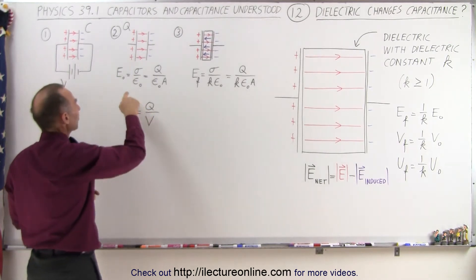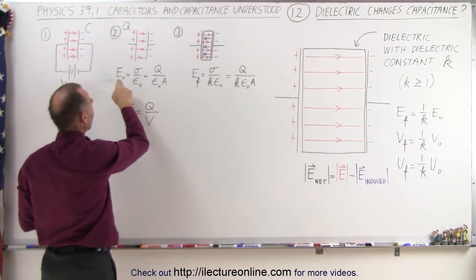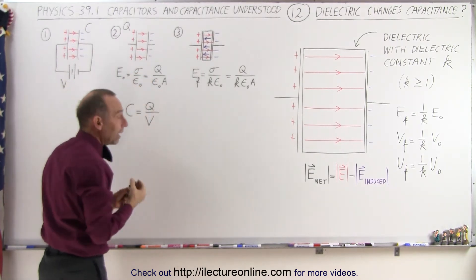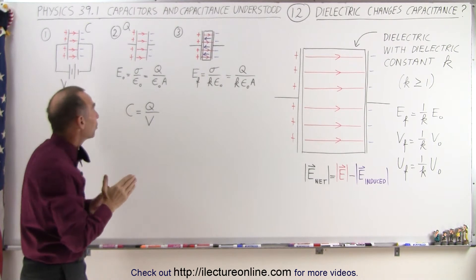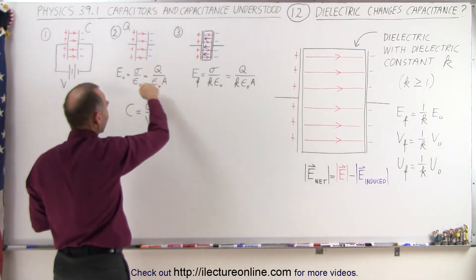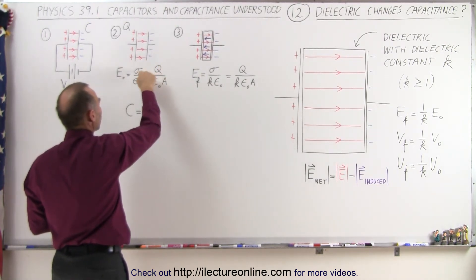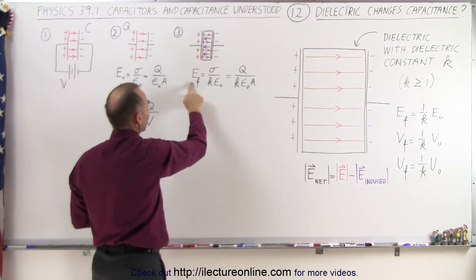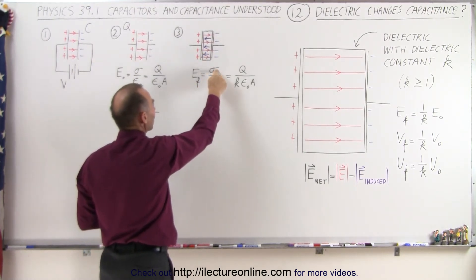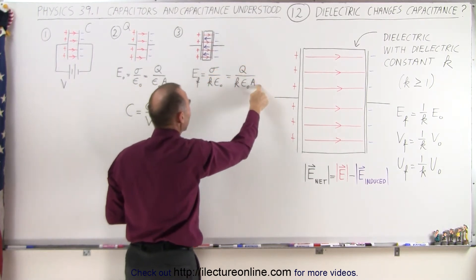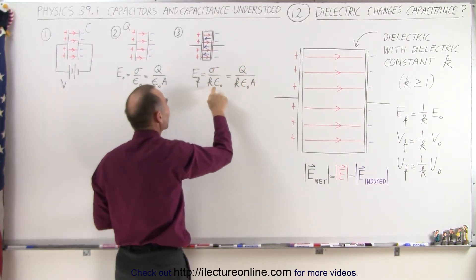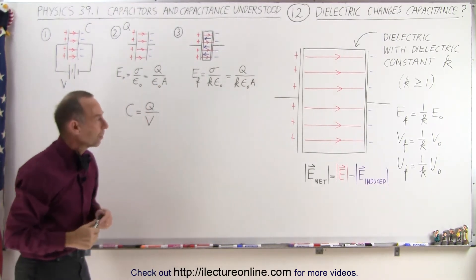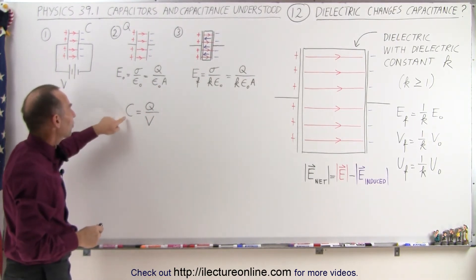It all comes down from the realization that the electric field between the plates is defined by the charge density divided by epsilon sub-naught when we have just air between the plates — so we can define it as q divided by a, which is the charge density. But when we put a dielectric in there, the electric field is defined as sigma, the charge density q over a, divided by k times epsilon sub-naught, k again being the dielectric constant. So how does the capacitance change?